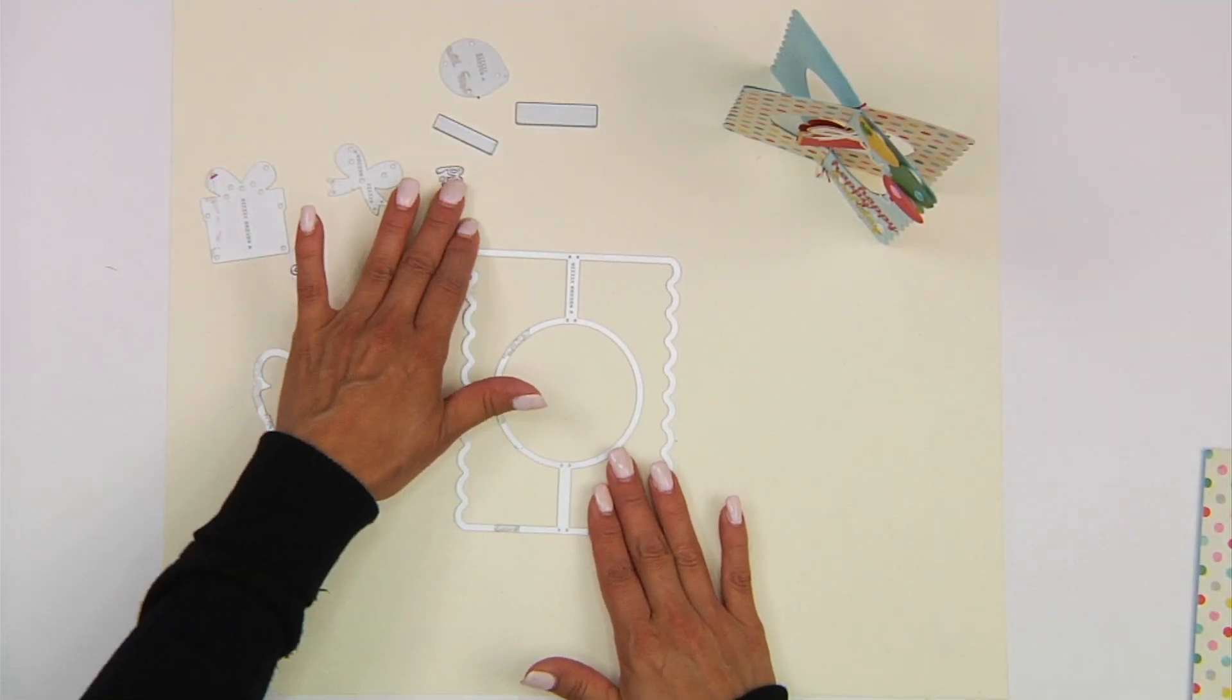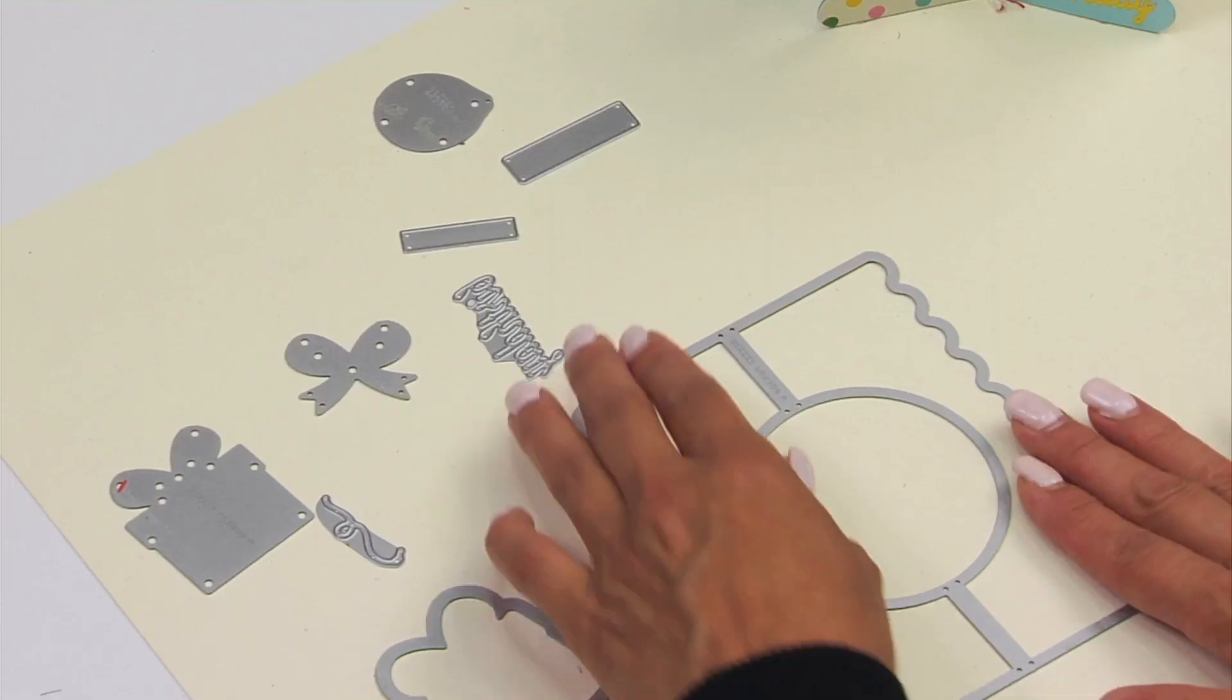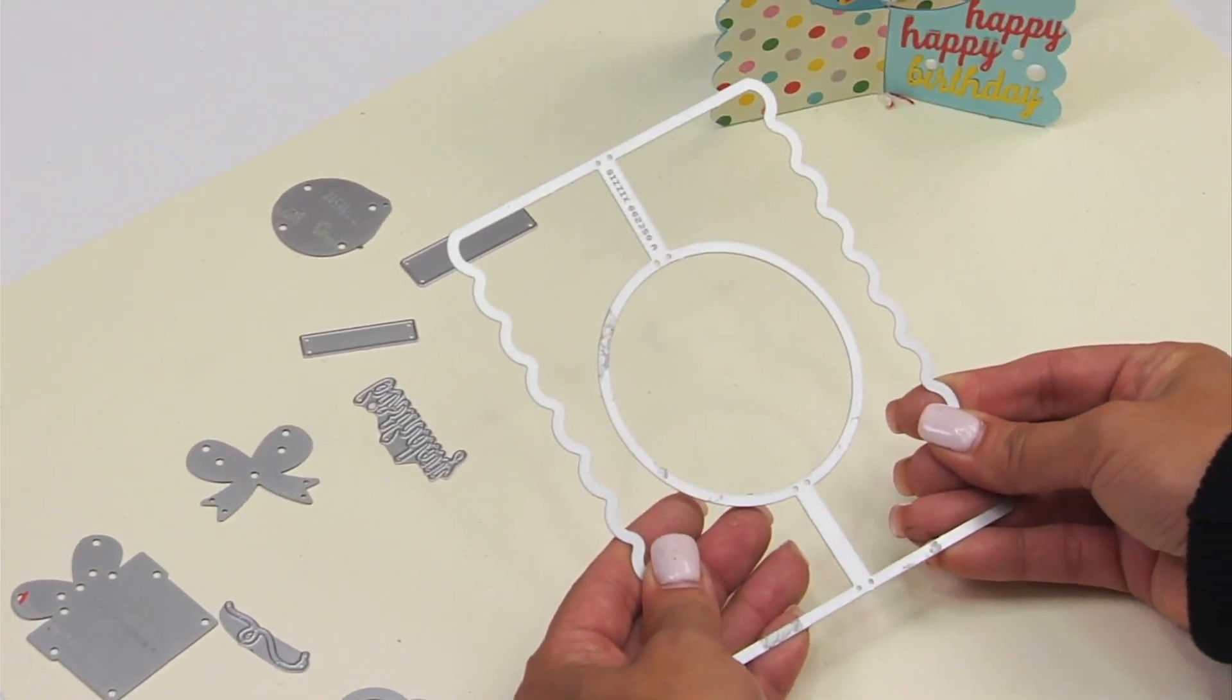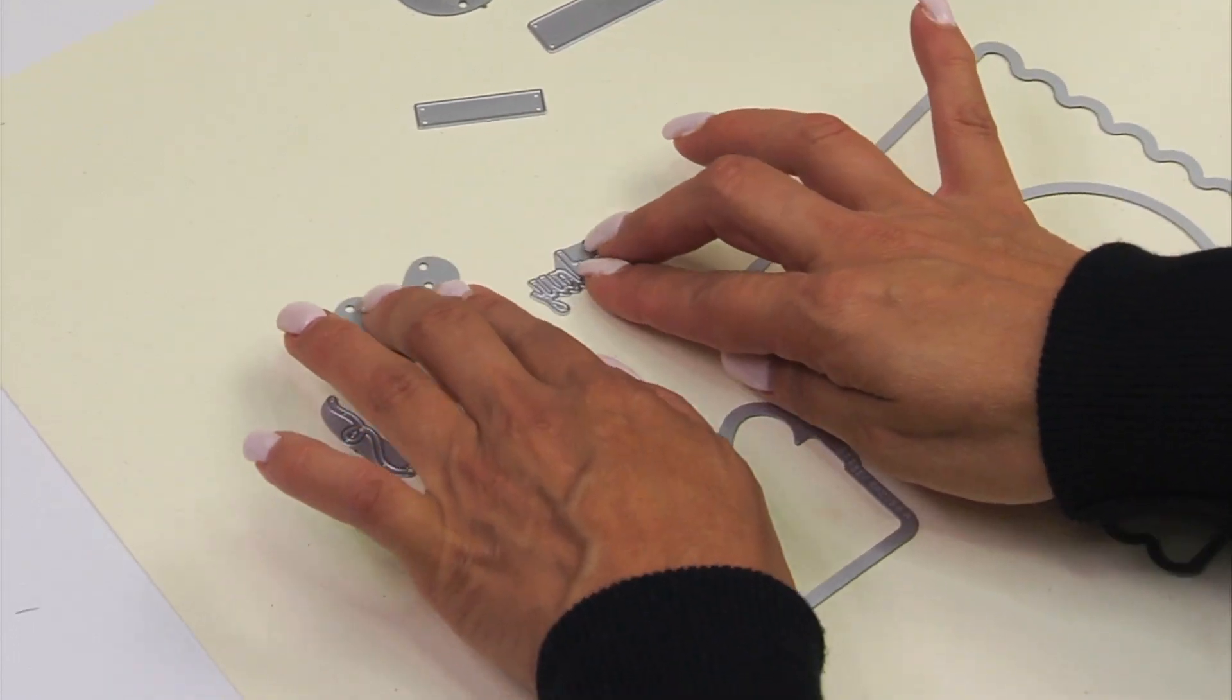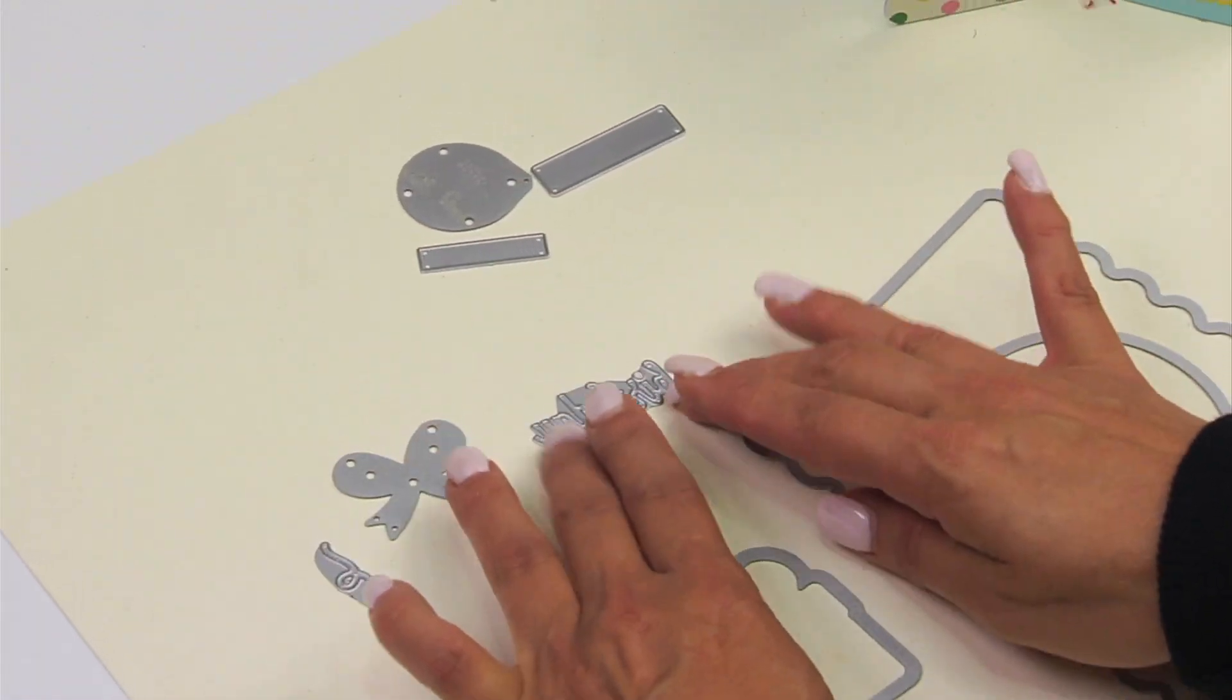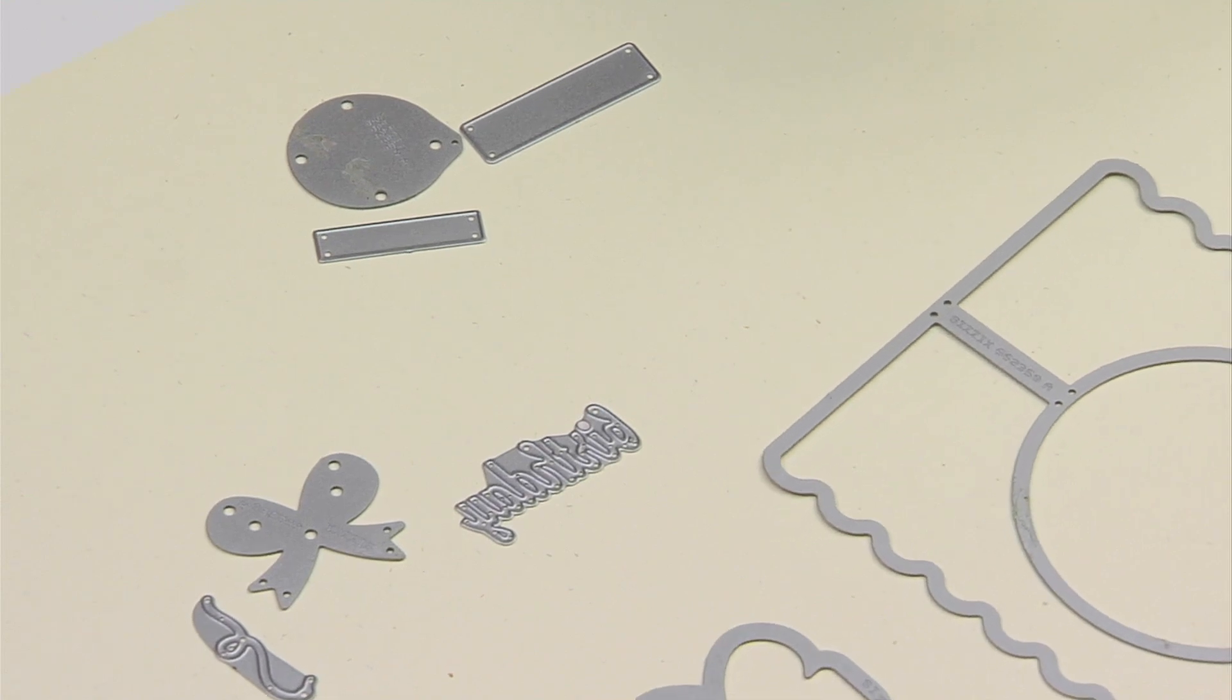Here is a look at some of the dies that are included in this collection. Here is the die that will be used for our base. There's also a gift, and a bow, and a fun balloon, and some sentiments too that you can add to your card.